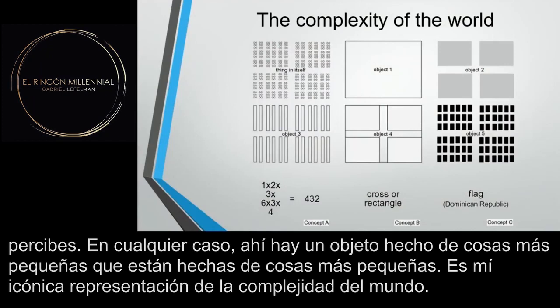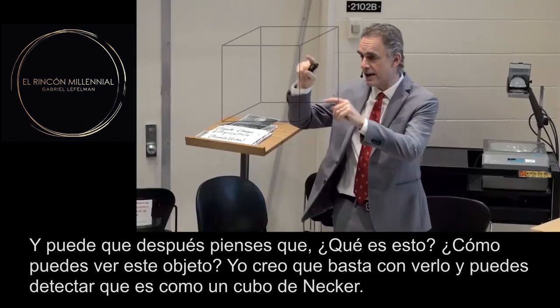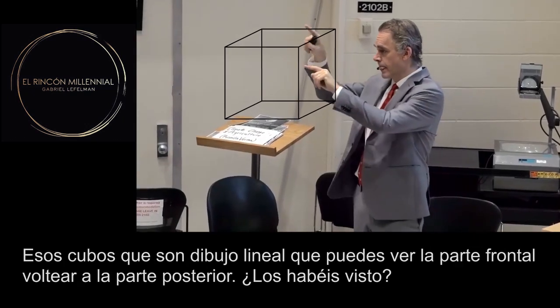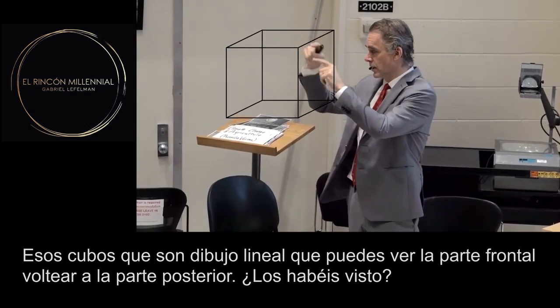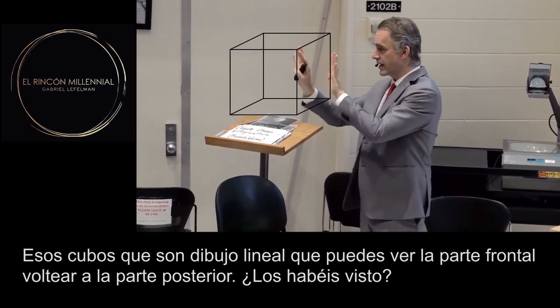So there's a thing made of smaller things, which are made out of smaller things — it's my iconic representation of the complexity of the world. And you could think: how can you see this object? If you just look at it, you can detect it's like a Necker cube — those cubes that are line drawings where you can see the front and then it flips to the back.